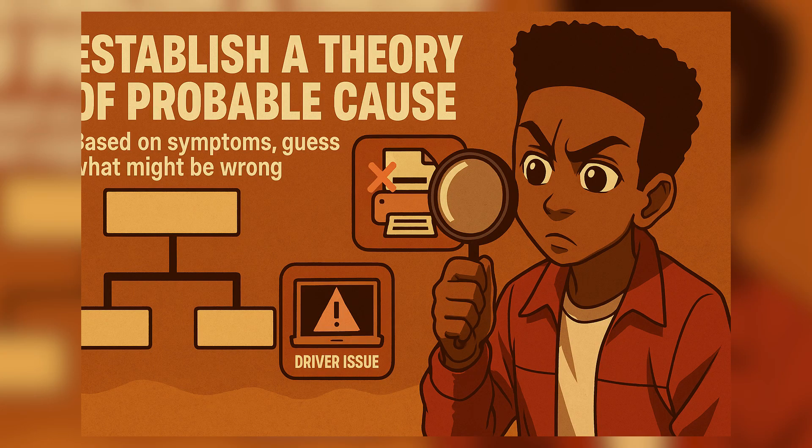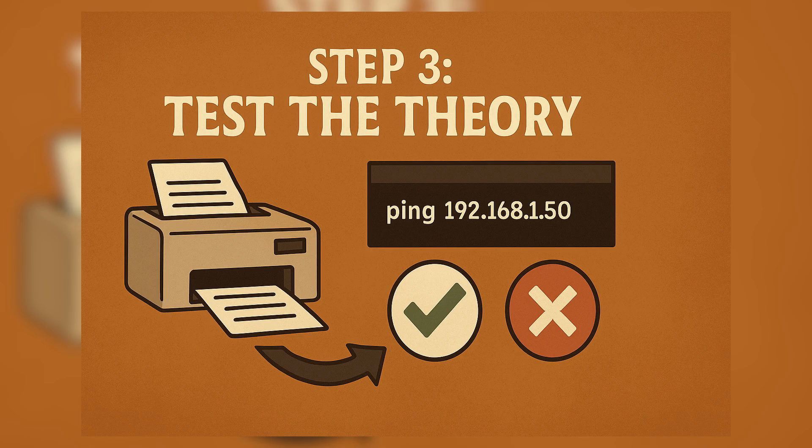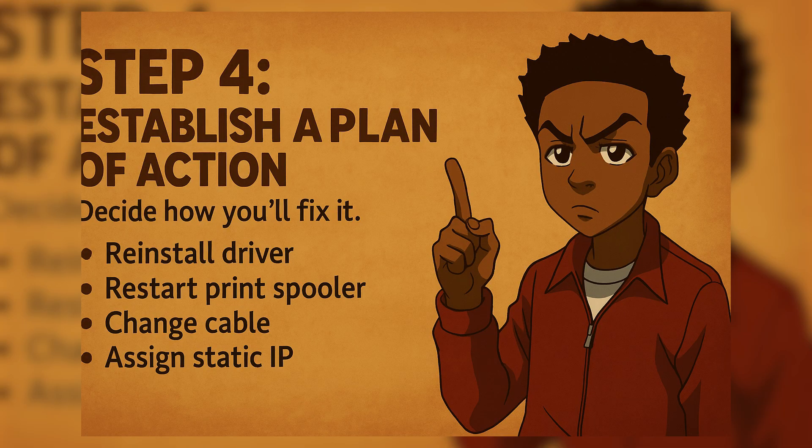Step two: establish a theory of probable cause. Based on symptoms, guess what might be wrong — maybe the printer is offline or drivers aren't installed. Step three: test your theory. Try printing a test page or pinging the printer's IP address. If your theory is wrong, go back and rethink.